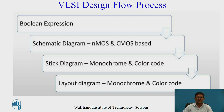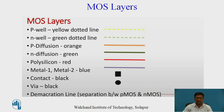In the VLSI design flow process, in the last session we discussed about the schematic diagram and the stick diagram. Now in this session we are discussing the layout diagram using monochrome and color code by the lambda-based rules. These are the mask layers by using which we are going to apply the lambda rules and design the CMOS layout.